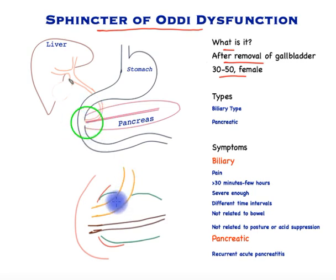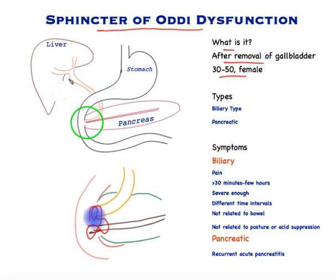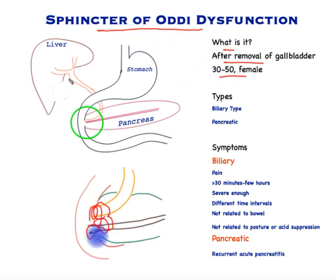This shows the bile tube traversing the pancreas alongside the pancreas tube. At the bottom end of the bile tube is a smooth muscle sphincter which goes around the bile tube, and then in a figure of eight it goes around the pancreas tube. This smooth muscle is called the sphincter of Oddi, and it is thought that the dysfunction of this sphincter around the bile tube is the main cause of sphincter of Oddi dysfunction. The other component around the pancreas tube causes pancreatic related symptoms in some patients.